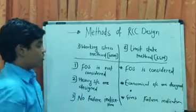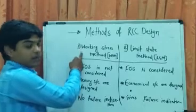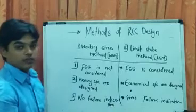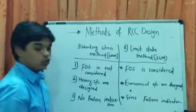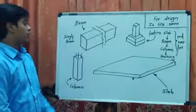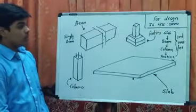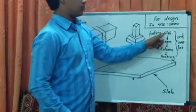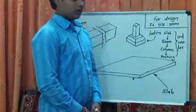In the WSM method, the biggest disadvantage is that if we design any member by this method, it doesn't show any indication of failure. But in the limit state method, the member shows failure indication. Here, I have drawn diagrams of a beam, a slab, and a column. The load transfer in a building is: slab transfers load to beam, beam to column, and column to footing.